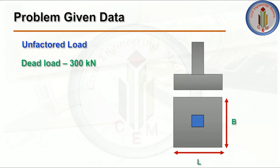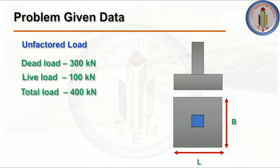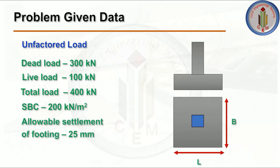First, let's look into the problem data. The unfactored loads to consider are: dead load = 300 kN, live load = 100 kN, so total load = 400 kN. SBC is 200 kN/m², and the allowable settlement of the footing is 25 mm. Using this data, we need to find the size of the footing and then the subgrade modulus of the soil, which is a very important factor for analyzing the foundation in SAFE software.